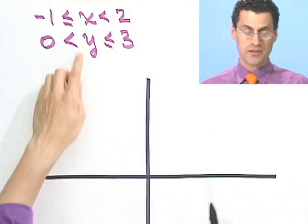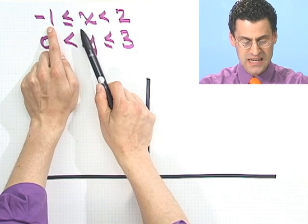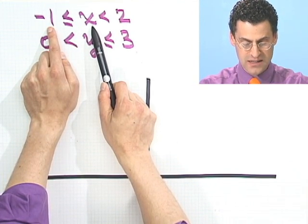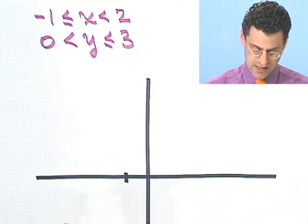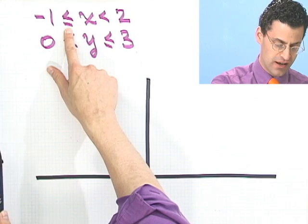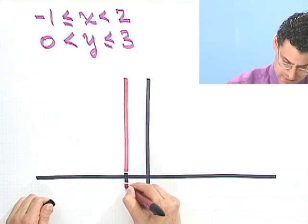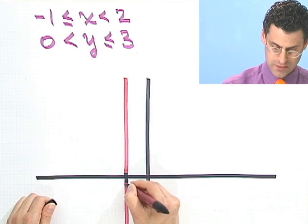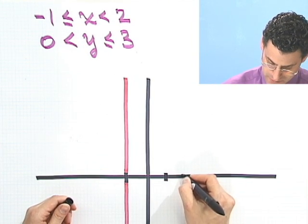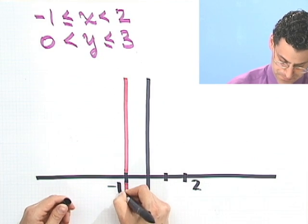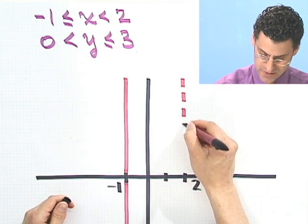I'm going to graph both of these things separately. For the first inequality, x equals negative one is a vertical line — all the places where x equals negative one. Since I see an equal sign, I'm allowed to include it, so I make it solid at x equals negative one. Now x equals two is over here, but notice I have strict inequality, so I'm going to put a dotted vertical line to represent that right-hand side.